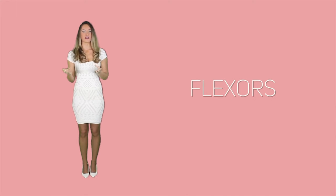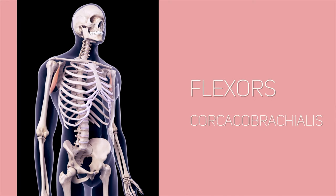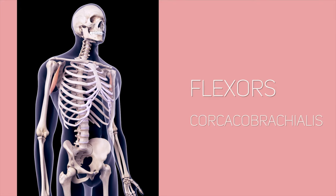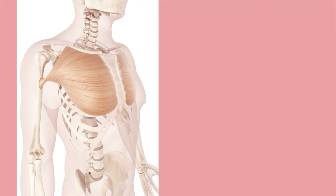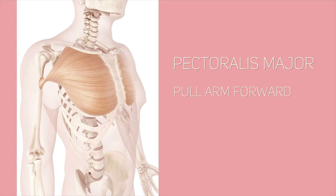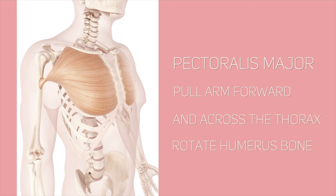Flexors are made up of the coracobrachialis that originates from the scapula bone across the shoulder and attaches to the humerus medially. The other flexor muscle is the pectoralis major, a huge and thick muscle that is shaped like a fan. It functions to pull the upper arm forward and also across the upper thorax.